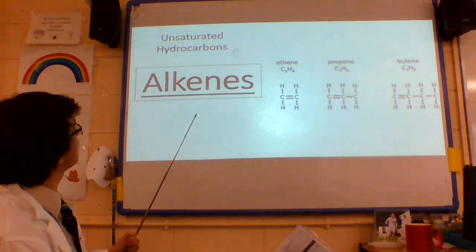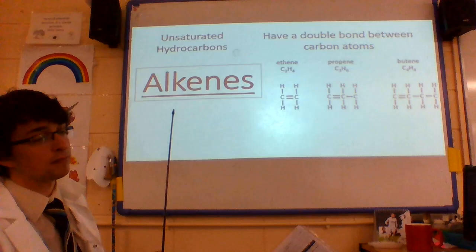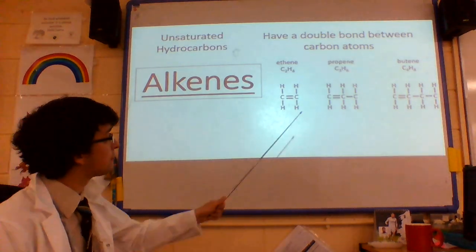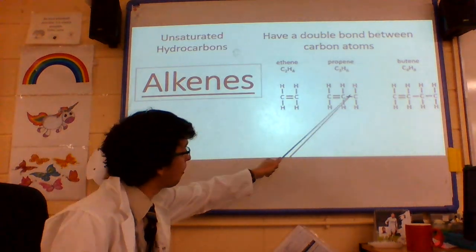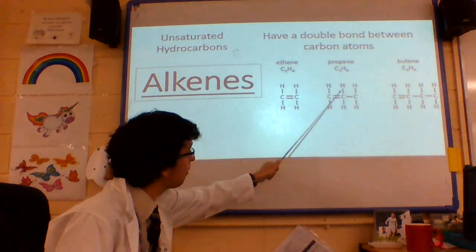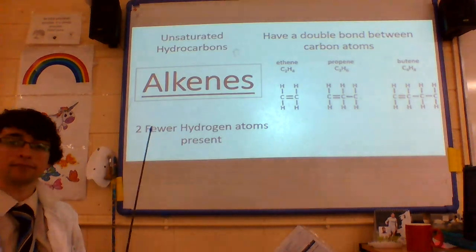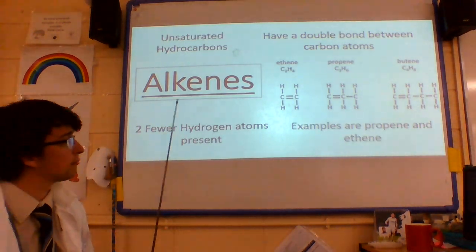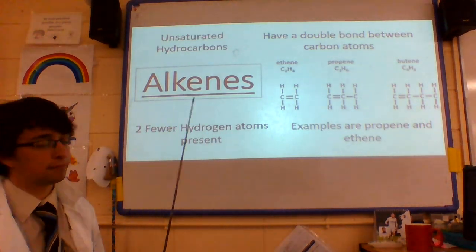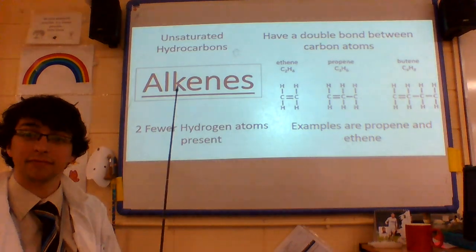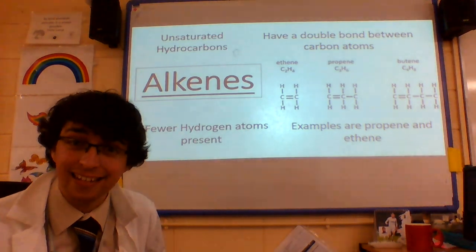Alkenes are unsaturated hydrocarbons. Alkenes have a double bond between the carbons. Alkenes have two fewer hydrogens present, so examples are propene and ethene. Splendid.